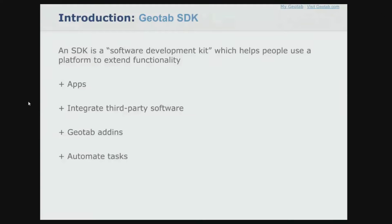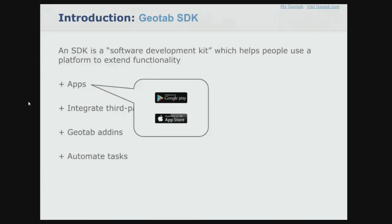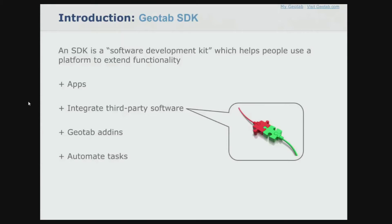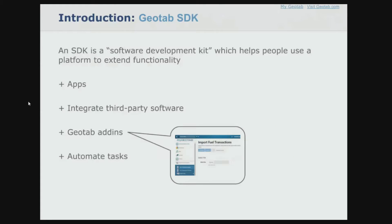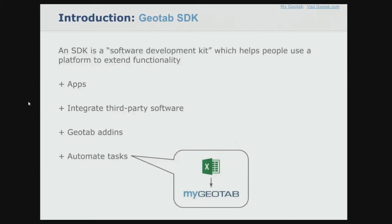An SDK is a software development kit, which helps people use a platform to extend some functionality. The MyGeotab SDK can be used to create apps for smartphones or integrate MyGeotab data with third-party software. This could be accounting software that bills a customer based on trip distance, or create MyGeotab add-ins. Add-ins provide a way to add new functionality and value-adding features inside the MyGeotab application, and automate tasks such as bulk importing devices, users, or zones to MyGeotab from an Excel spreadsheet.